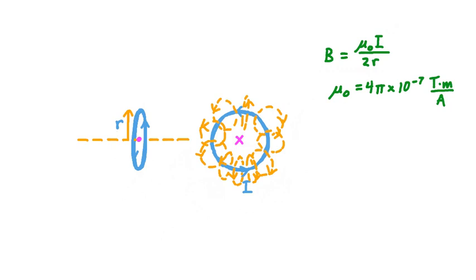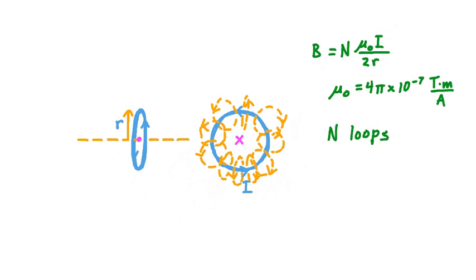Because the current in these loops all points in the same direction, it reinforces the magnetic field. So, if we have a situation where there are N loops of current, where N is an integer value, the strength of the magnetic field at the center reflects that change. We take the field strength created by a single loop and multiply it by the number of loops. That's how we calculate the magnitude of the magnetic field at the center. But what about field direction? Magnetic field is a vector, having both magnitude and direction.